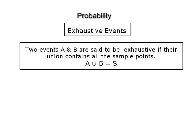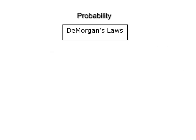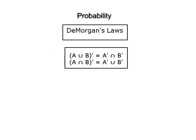De Morgan's laws are: Number 1, (A ∪ B) complement is A complement ∩ B complement. Number 2, (A ∩ B) complement is A complement ∪ B complement.